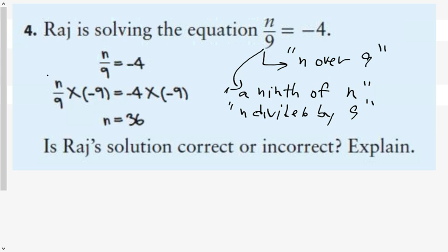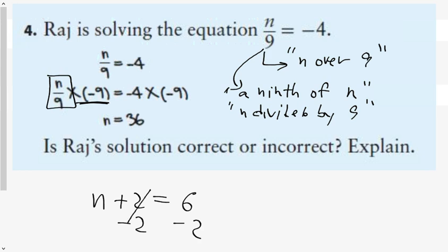Raj chose to multiply by negative 9. He did that because in grade 7, if you had N plus 2 equals 6, you got rid of the positive 2 by putting the opposite number on both sides, and that worked. But when getting rid of coefficients — in this case a fractional coefficient of a ninth — you don't multiply by the opposite. He should have multiplied both sides by a positive 9.